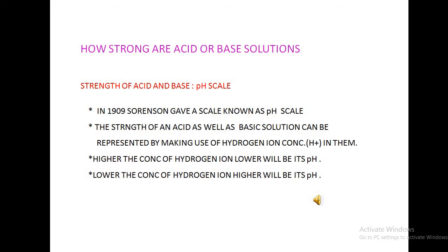On the pH scale, we can measure pH generally from zero, that means very acidic, to 14, very alkaline. Higher the concentration of hydrogen ion, lower will be its pH. Lower the concentration of hydrogen ion, higher will be its pH.